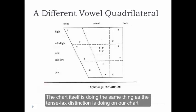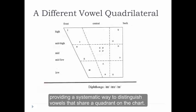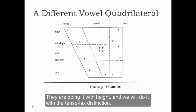The chart itself is doing the same thing as the tense-lax distinction is doing on our chart, providing a systematic way to distinguish vowels that share a quadrant on the chart. They are doing it with height, and we'll do it with a tense-lax distinction.